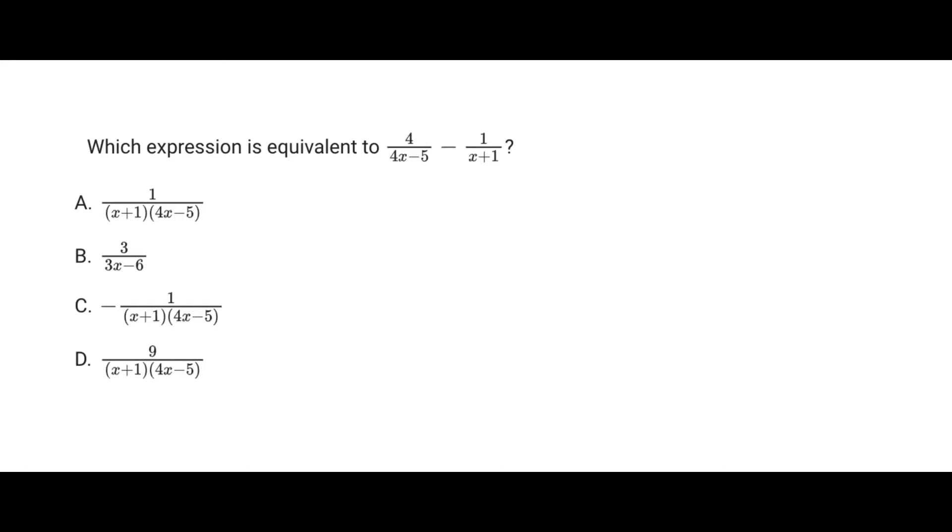So we see here that in the first term we have 4x minus 5 at the denominator, and then for the second term it is x plus 1. So what we can do pretty easily is just find a common multiple between these two terms. And we can just do that by multiplying 4x minus 5 by x plus 1, and then vice versa, multiply x plus 1 by 4x minus 5.